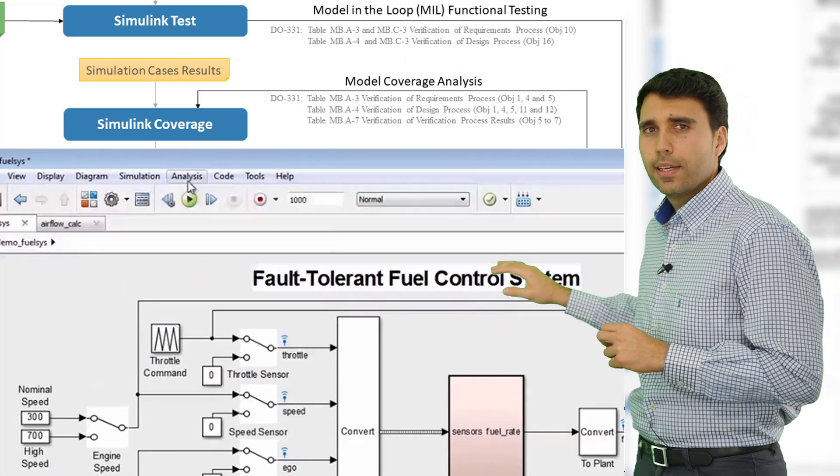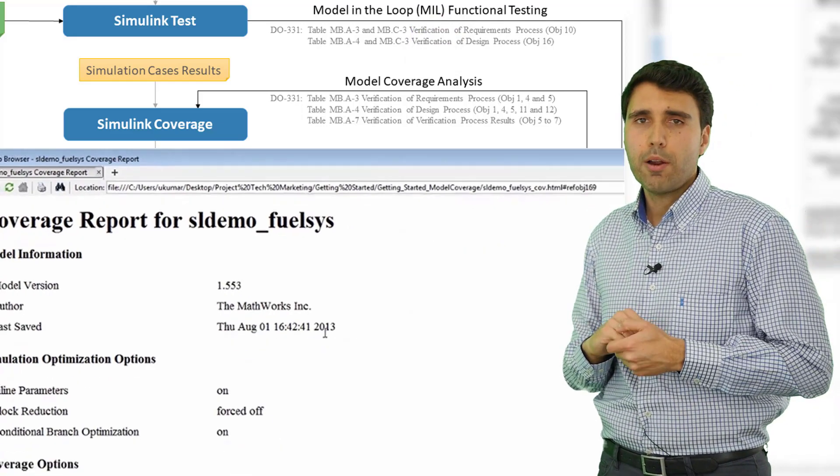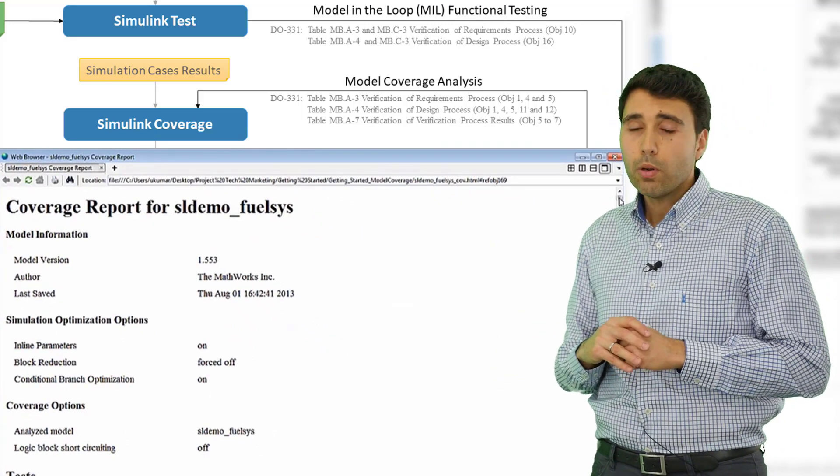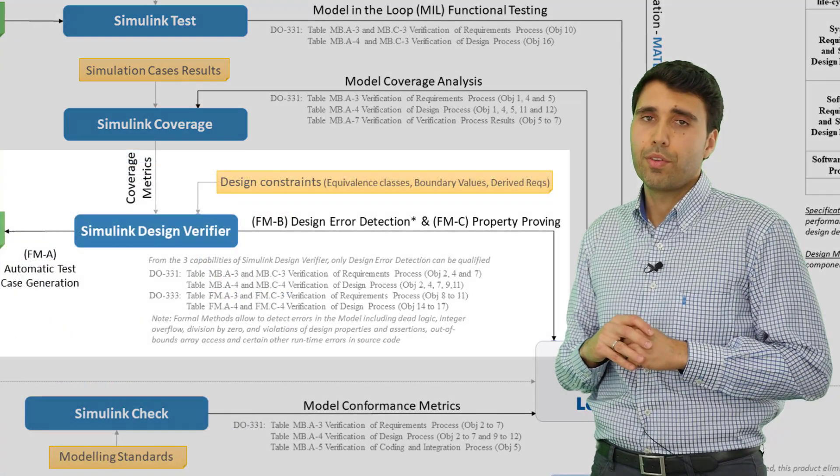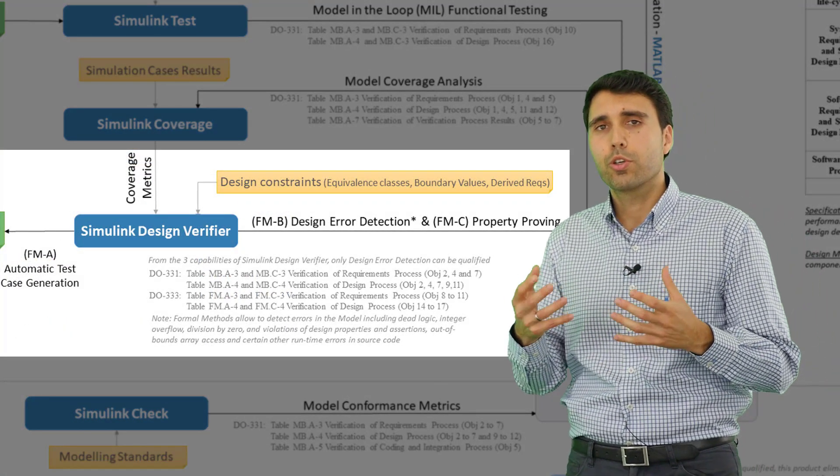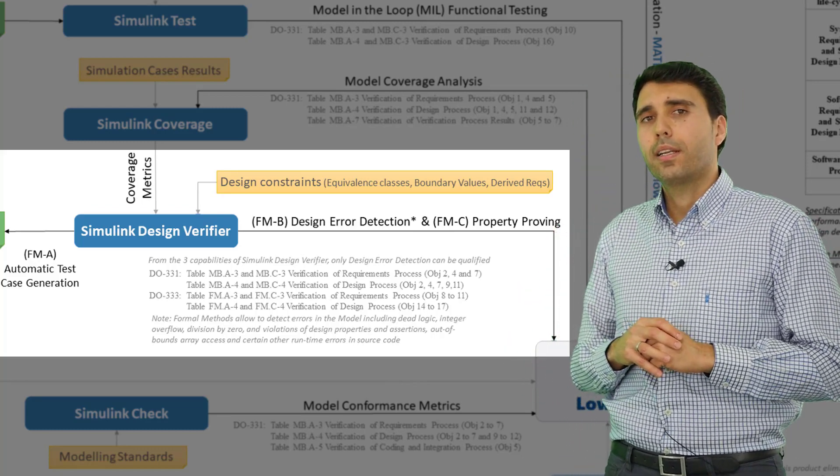In any case, in order to analyze what's the problem with the coverage information, you can do it manually. But also, according to the DO-333, you can use formal methods to identify those corner cases that doesn't allow you to get 100% of coverage.